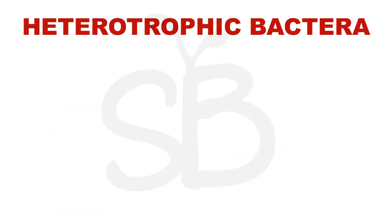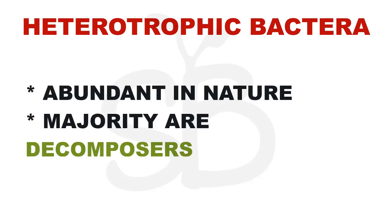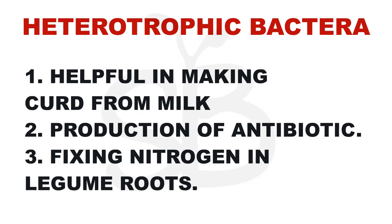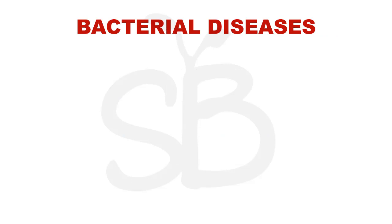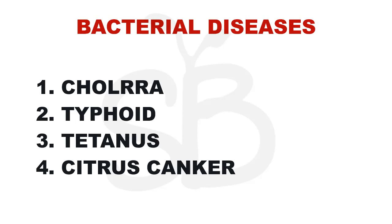Heterotrophic bacteria — there are around 3000 organisms in this world. These bacteria are useful. Antibiotics production, nitrogen fixation in legume plant roots — these are important uses. They are also called pathogens, meaning disease-causing organisms. They cause damage in human beings, crops, farms, animals, and pets.